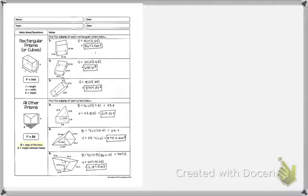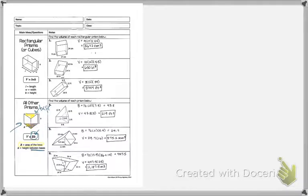For all other prisms, the key is big B. The formula is a multiplication problem: big B times height. Big B is the area of the base, so you need to find the area of whatever the base is — you only need one of them. Height is the distance between the two bases. To know what type of prism it is, focus on the two similar shapes. For instance, if there are two identical triangles, those are your bases, and the space between them is your height.